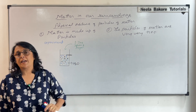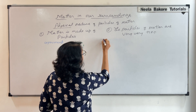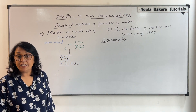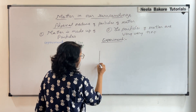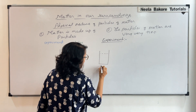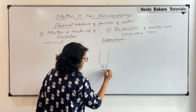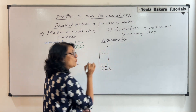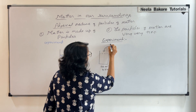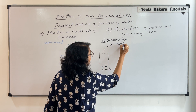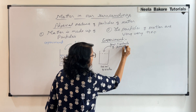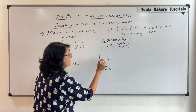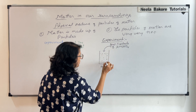With this experiment we can conclude that matter is made up of particles. The second point we want to understand is that these particles are very tiny. Again, we take an experiment: suppose we take a beaker with 100 milliliters of water and add a few crystals — maybe one, two, or three crystals.